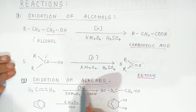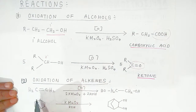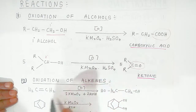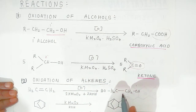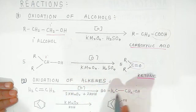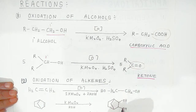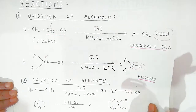Now, oxidation of alkenes — which is a very important reaction. Here ethene, when oxidized in presence of KMnO4 and KOH (a base), the double bond is converted into a single bond, forming an alcohol. Similarly, a double bond present in a ring is converted into a single bond, forming the corresponding vicinal alcohol.